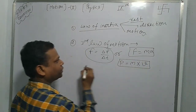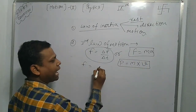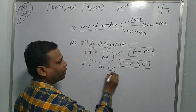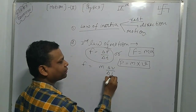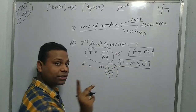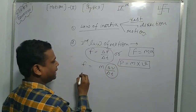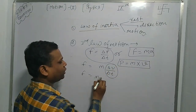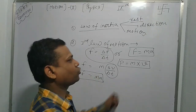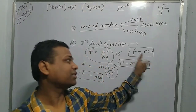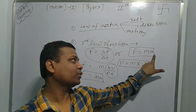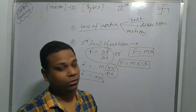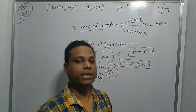How can you derive F equals MA from it? F equals M times delta V upon delta T, and delta V upon delta T is known as acceleration A — the rate of change of velocity. So you get F equals MA. We can say force is directly proportional to acceleration. Mass is a scalar quantity and cannot be changed.